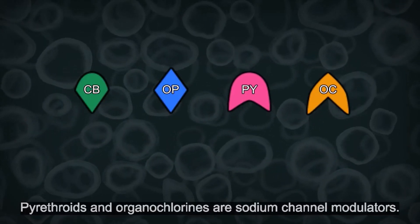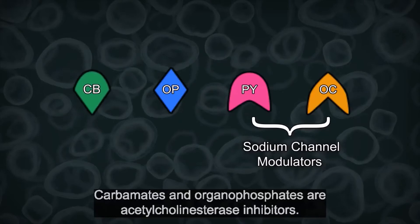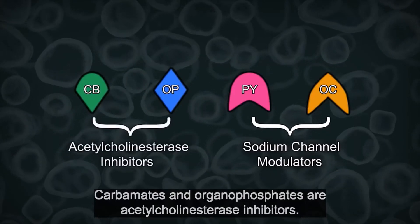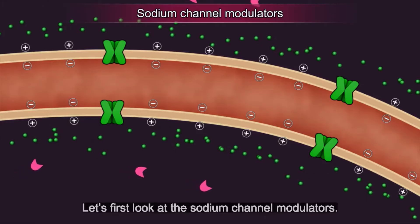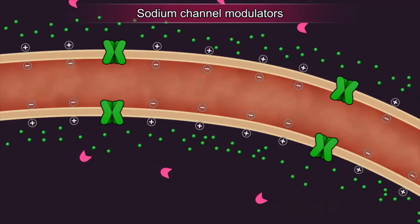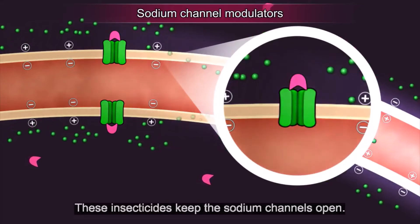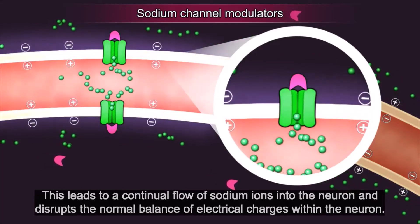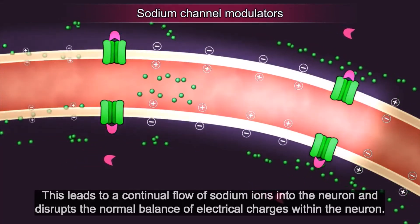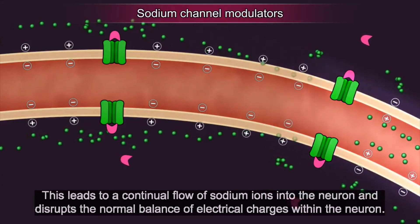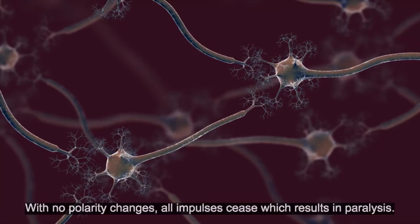Pyrethroids and organochlorines are sodium channel modulators. These insecticides keep the sodium channels open. This leads to a continual flow of sodium ions into the neuron and disrupts the normal balance of electrical charges within the neuron. With no polarity changes, all impulses cease, which results in paralysis.